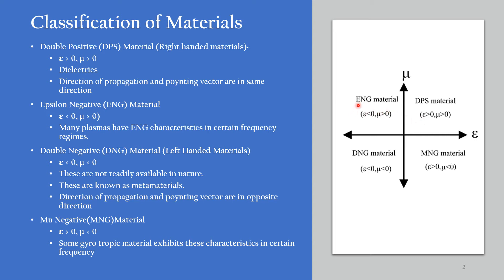Next one is ENG material, or epsilon negative material. For this, epsilon will be negative and permeability will be positive. Most of the plasmas have ENG characteristics in certain frequency ranges.